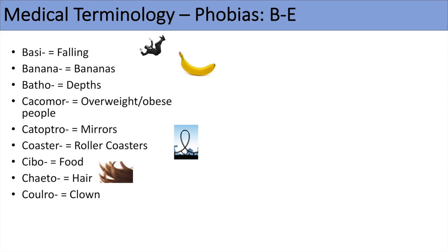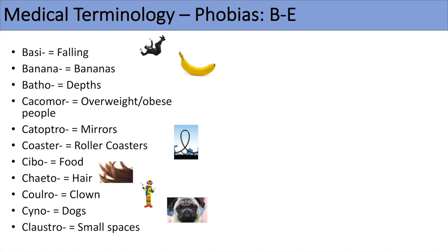Coulro means clown, so coulrophobia is a fear of clowns — a very common phobia that many people have. The next one is cyno, which means dogs, so cynophobia is a fear of dogs. Another very common one is claustro, meaning small spaces, so claustrophobia literally means a fear of small spaces. The next prefix is carcino, which means cancer — think of carcinogenic to remember this — so carcinophobia is a fear of cancer or developing cancer.